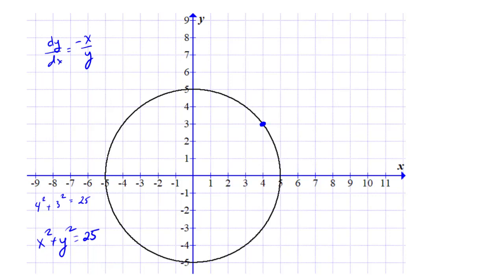If I wanted the tangent line at that point, I would know that dy/dx at the point (4,3) would just be -x over y, so -4/3. Let's see that in here. There's the slope of -4/3.